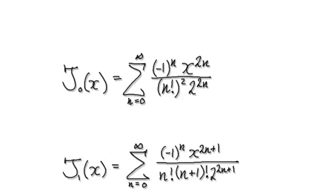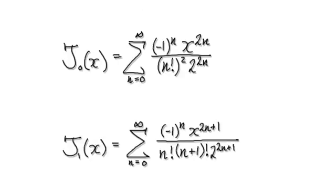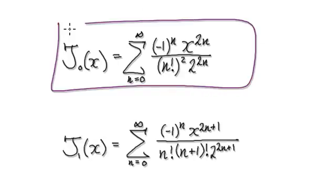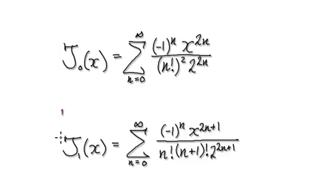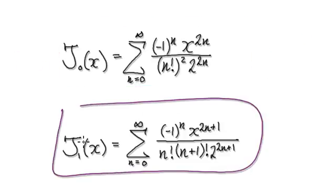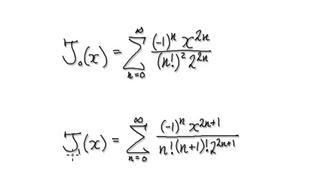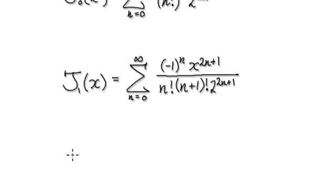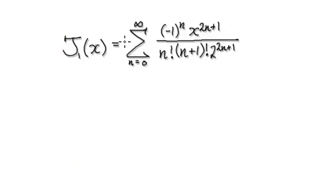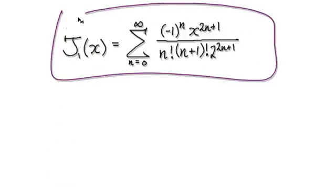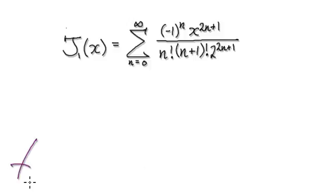Let's give you some more practice. We've already seen the Bessel function of order 0 — we've seen this and done it. Now we're going to look at the Bessel function of order 1. Find the domain for this function. Press pause and have a go.